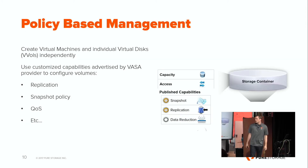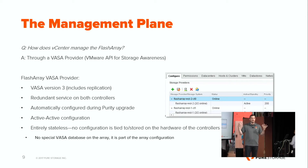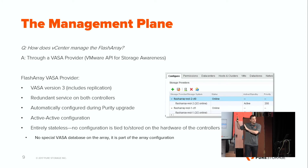Back to the VASA provider: VASA version 3. This is the version that includes replication, and this is what we support. There will be a redundant service on both controllers — VASA active-active on both controllers. There is no VASA database, so there's no need to back it up or restore it. It is stateless as far as the controllers are concerned. If you were to lose both controllers and replace them with even a completely different model of Flash Array controllers, boot it back up, and it pulls in all that metadata from the SSDs, from the underlying storage — bindings, sizes, VVol ID, all that. The only way you lose your VASA database is if you literally lose your entire array. This is all done by the standard mechanisms inside the Flash Array controllers, and it gets automatically installed and configured when you upgrade to the VVol-supported version of Purity.